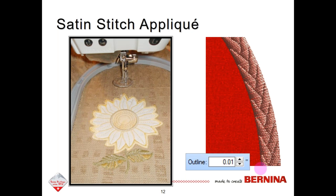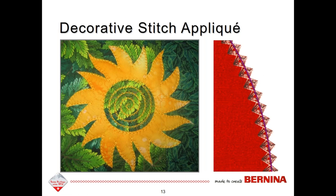The software will also do satin stitch applique. Satin stitches can be widened, and you can create an imprint in the satin stitches so they have texture. There are 195 different satin stitch patterns that can be used. When you want to increase the width of your satin stitch, that is done in tool options in the outline tab. There are also over 500 different decorative stitches in DesignWorks software that are fun to use around your applique, and all these stitches can be mirrored in object properties.